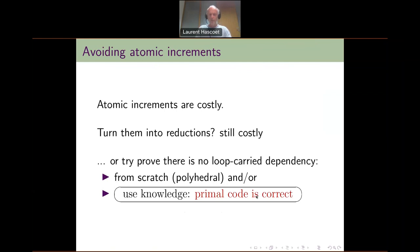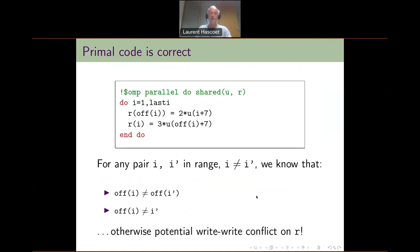We can complement these methods by something new, due to the fact that we are actually running differentiation. We have an original program which we call the primal code, and we assume that the primal code is correct. This is knowledge we are going to use to discover that some atomics are not needed in the differentiated code. So let's do that on this example.